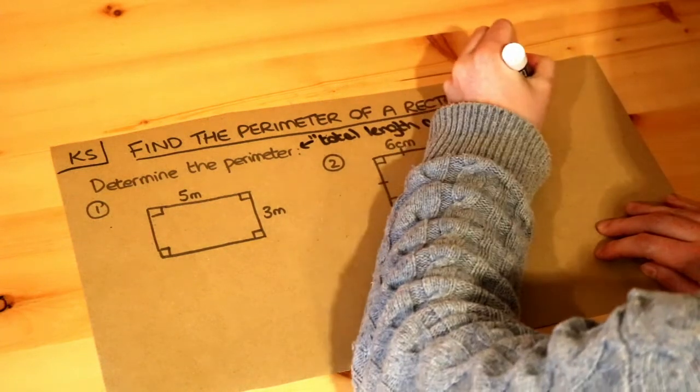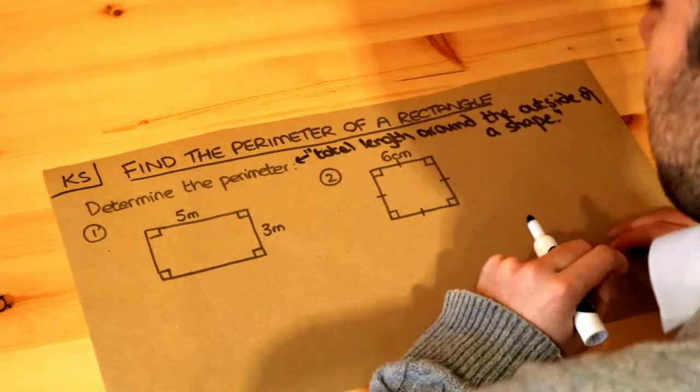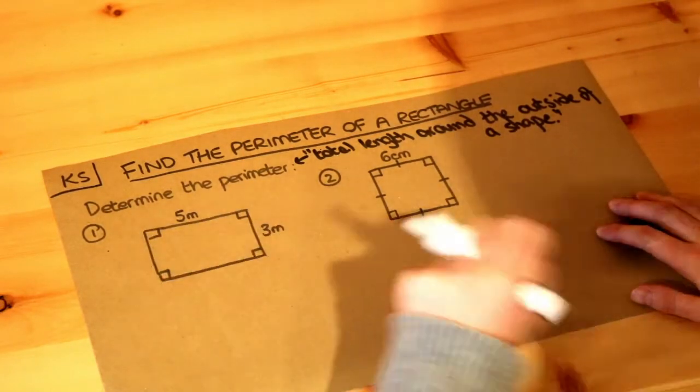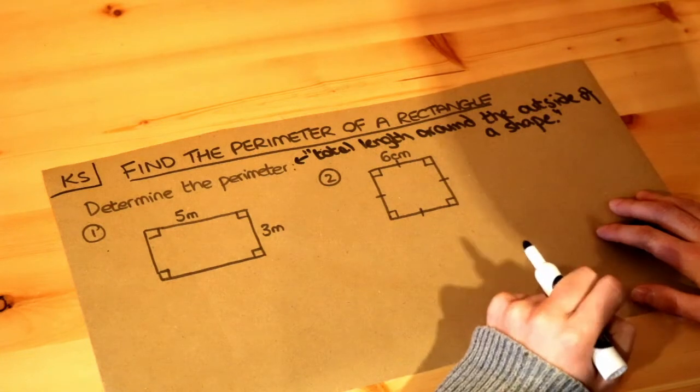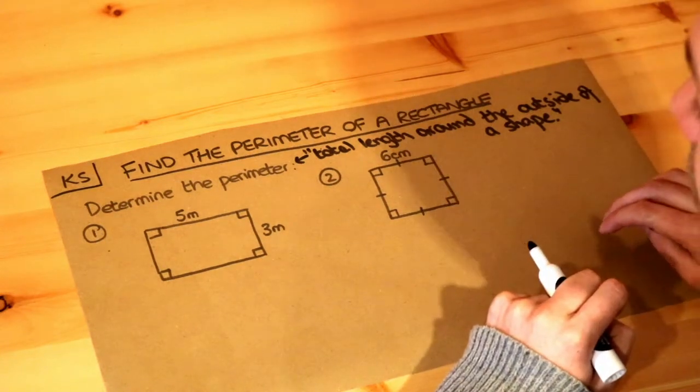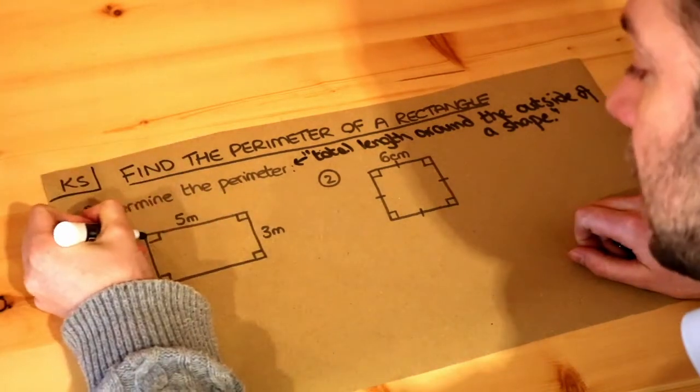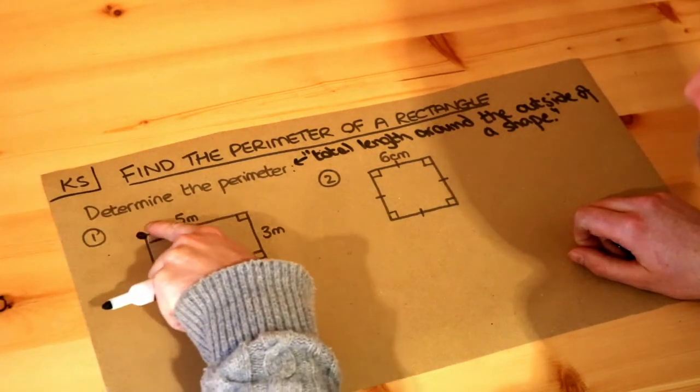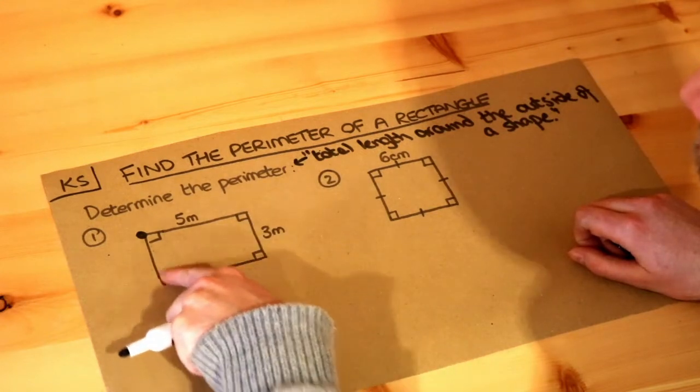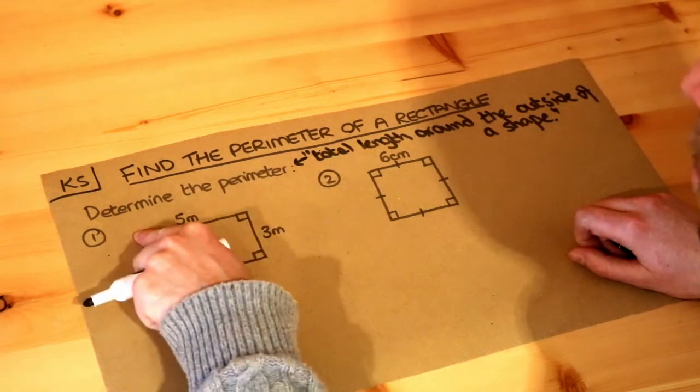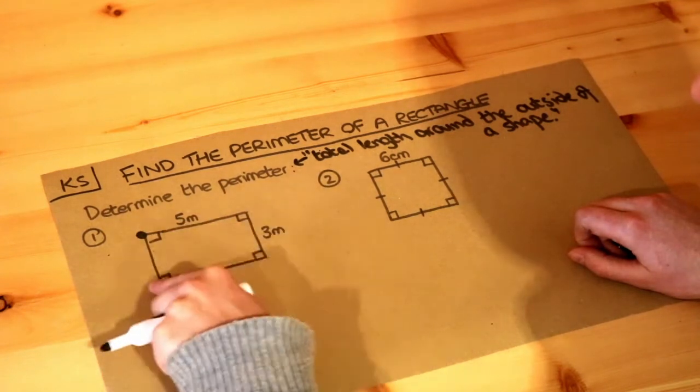And we saw that in a previous video. So what that means is that if we were to take each of the lengths, each of the sides of a shape, and we added them all up, that would be the perimeter. You can think of that as the total distance you would have to walk around the shape. So if I started at this point in the shape and I was to walk all the way around the shape, around the outside, the length of the perimeter would be how far we walked in total to get back to where we started.